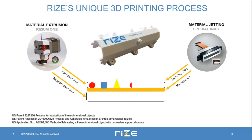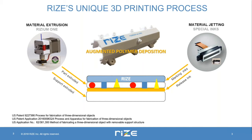Now I wanted to talk about RIZE's technology in particular. We have a patented technology called augmented polymer deposition, which combines material extrusion of thermoplastics with material jetting of functional inks through the types of print heads found on a 2D printer. These are combined into a hybrid technology. Between each layer of extruded thermoplastic we can jet different functional inks to achieve a variety of effects. Normally, support is first extruded as thermoplastic through the material extrusion head.